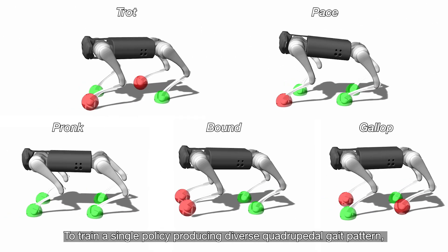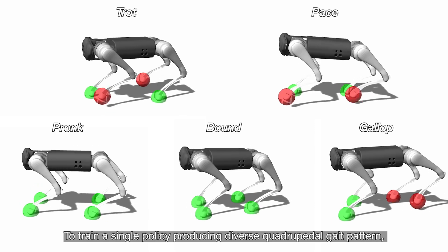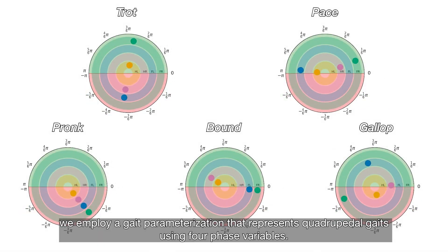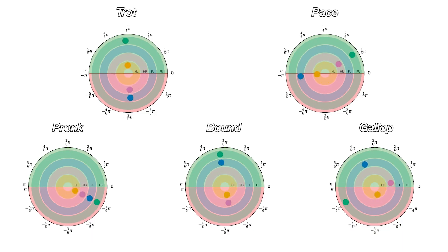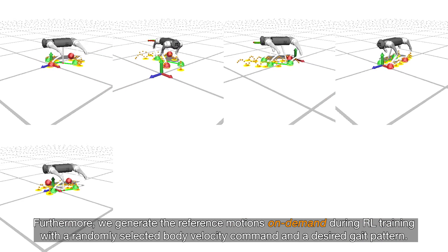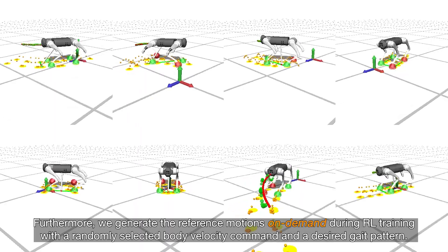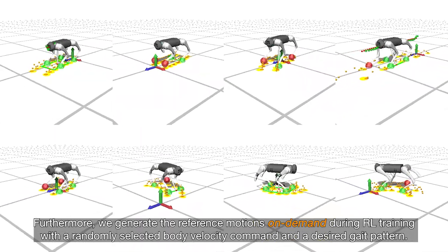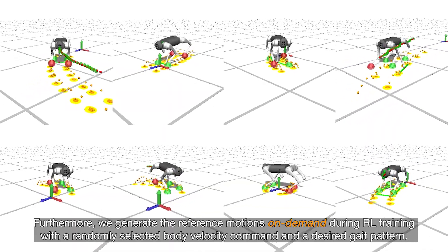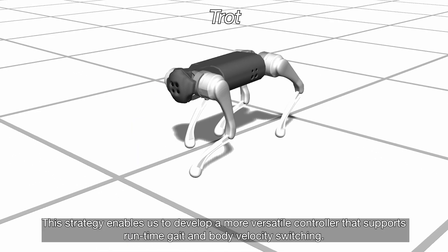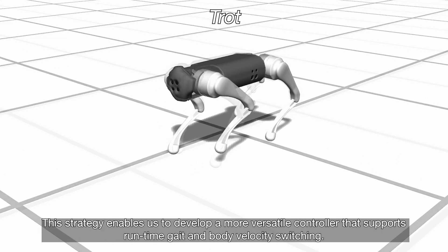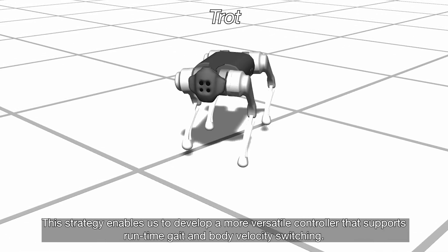To train a single policy producing diverse quadrupedal gait patterns, we employ a gait parameterization that represents quadrupedal gaits using four phase variables. Furthermore, we generate the reference motions on demand during RL training with a randomly selected body velocity command and a desired gait pattern. This strategy enables us to develop a more versatile controller that supports runtime gait and body velocity switching.